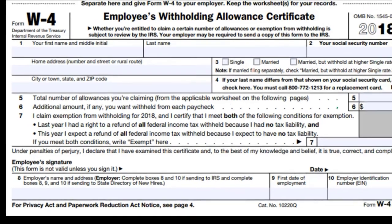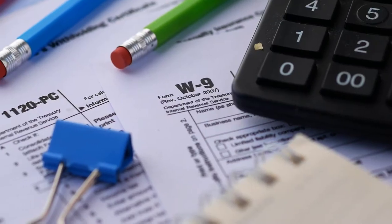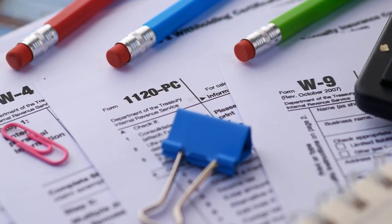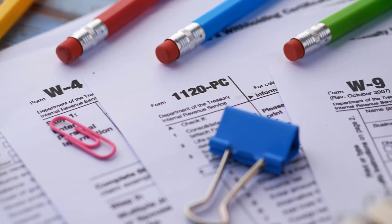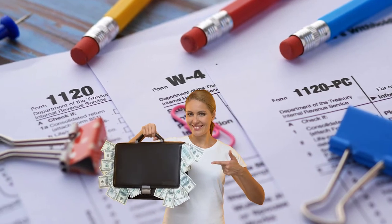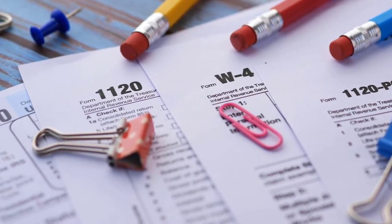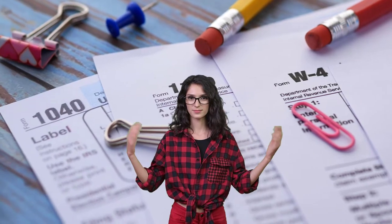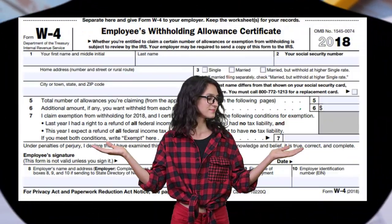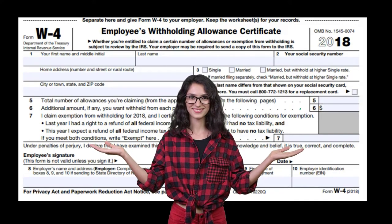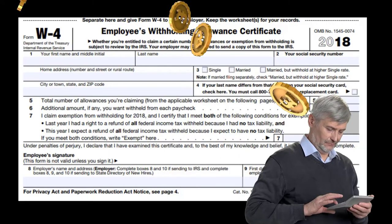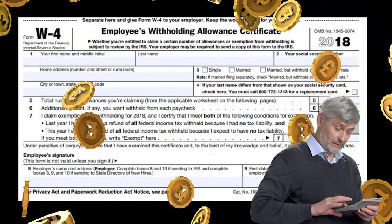Why would you want an additional amount withheld — meaning less take-home pay? Basically, if you do a tax estimate with your tax professional and come up with a number suggesting you need more withheld, it may be because you have other income sources pushing you into a higher tax bracket, or a spouse with substantial income, meaning withholdings from this W-4 alone will not be sufficient to cover your taxes.